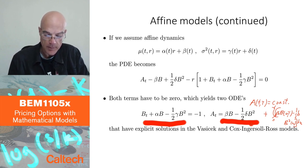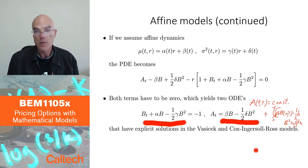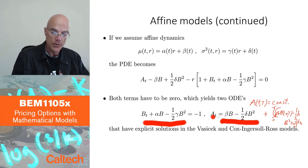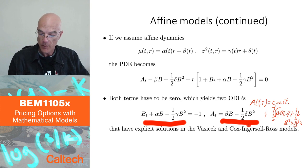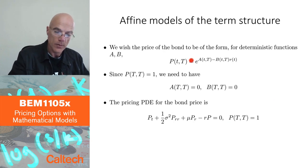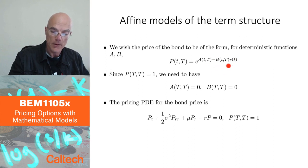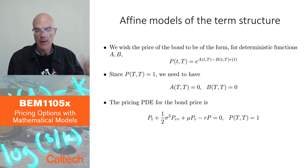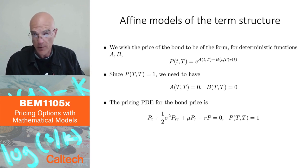There are explicit solutions in the Vasicek and Cox-Ingersoll-Ross models, which is why I told you those models have explicit solutions for bond prices. You solve the two differential equations to get A and B, plug them into the exponential form, and you have your bond price. Then you can do calibration — choosing which particular parameters a, b, and σ to fit the observed bond prices.